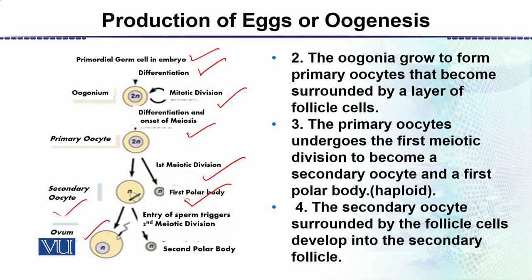At this stage there is ovulation, and the second meiotic division is triggered just at the entry of the sperm. This process then quickens and results in the second polar body. So these are the complete five stages which we will be discussing. The primary oocyte undergoes the first meiotic division to become a secondary oocyte and a first polar body, both of which are haploid.